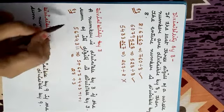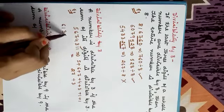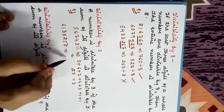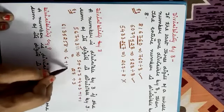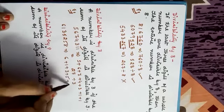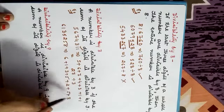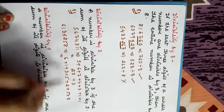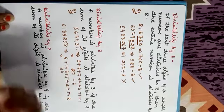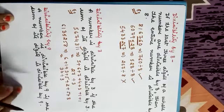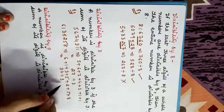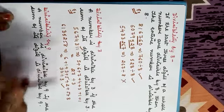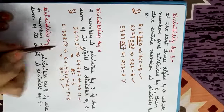One more example: 6,13,528. We add all the digits: 6 + 1 + 3 + 5 + 2 + 5 + 8 = 30. Is 30 divisible by 3? Yes, it is divisible by 3. Clear? So the rule is: add all the digits, and if the resulting sum is divisible by 3, then the complete number is divisible by 3.